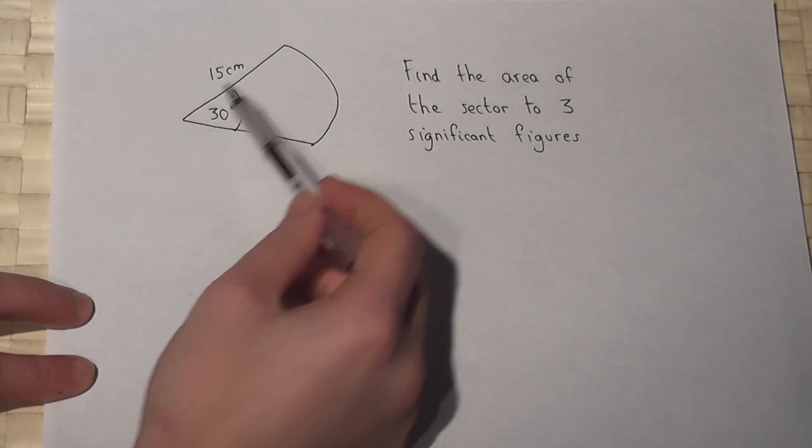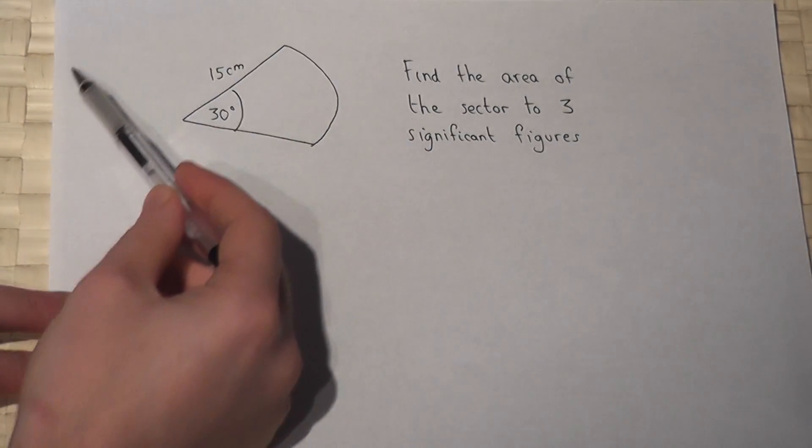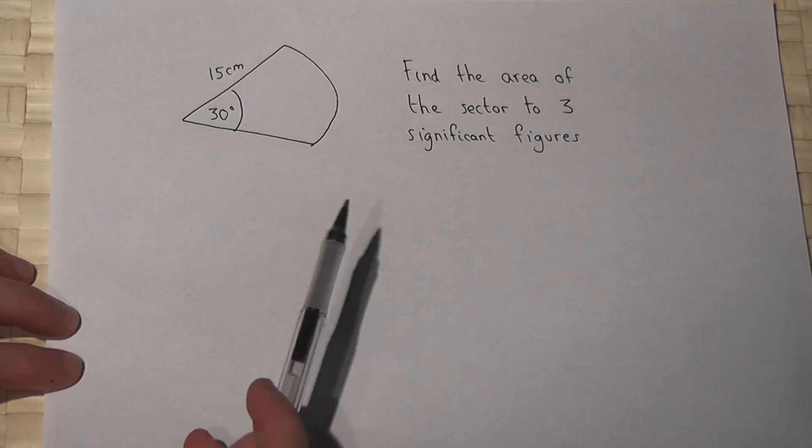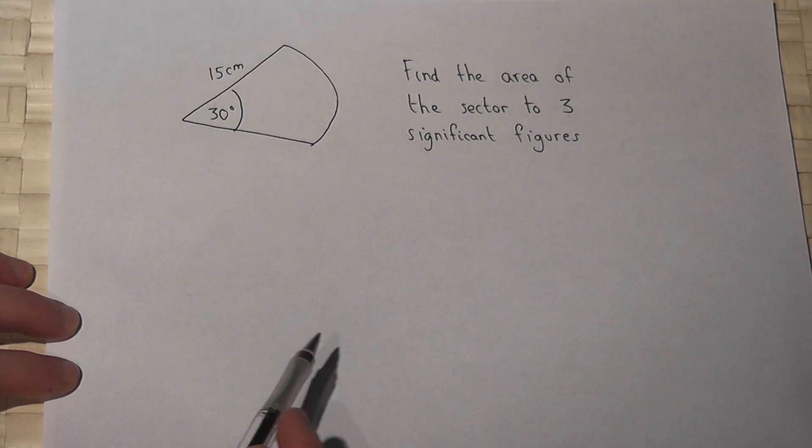In this question we have a sector which is part of a whole circle and we're asked to find this area. Now it's actually really rather easy to find the area of a sector.